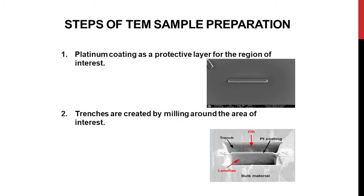The next module is TEM sample preparation. There are different steps — let us go through each. When you prepare a sample for TEM, we make a very thin slice in the order of less than 100 nanometers. To make a lamella for TEM, we need to protect the region of interest. The first step is platinum coating: in-situ we do a deposition of a very thin layer of platinum as a protective layer for the region of interest.